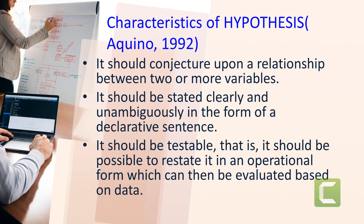According to Aquino in 1992, there are different characteristics of a hypothesis. First, it should conjecture upon relationships between two or more variables. Second, it should be stated clearly and unambiguously in the form of a declarative sentence. And third, it should be testable — that is, it should be possible to state it in an operational form, which can then be evaluated based on data.